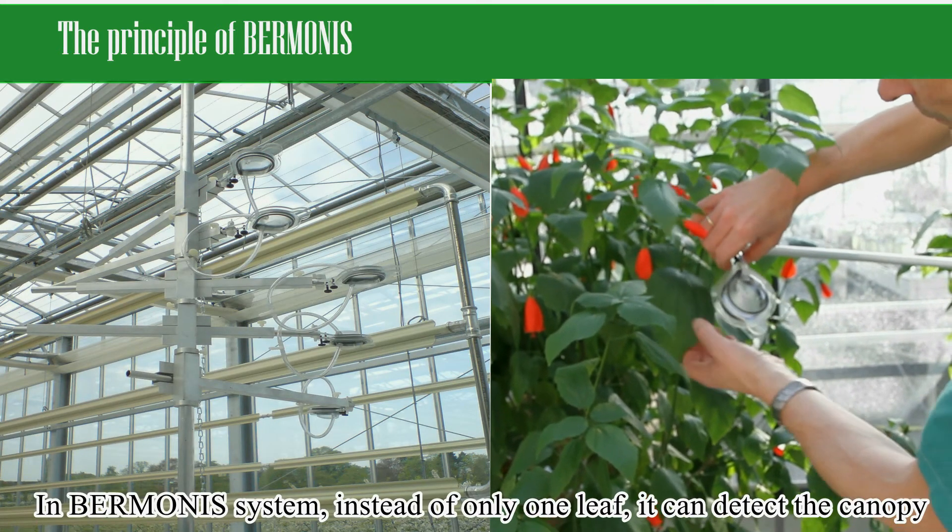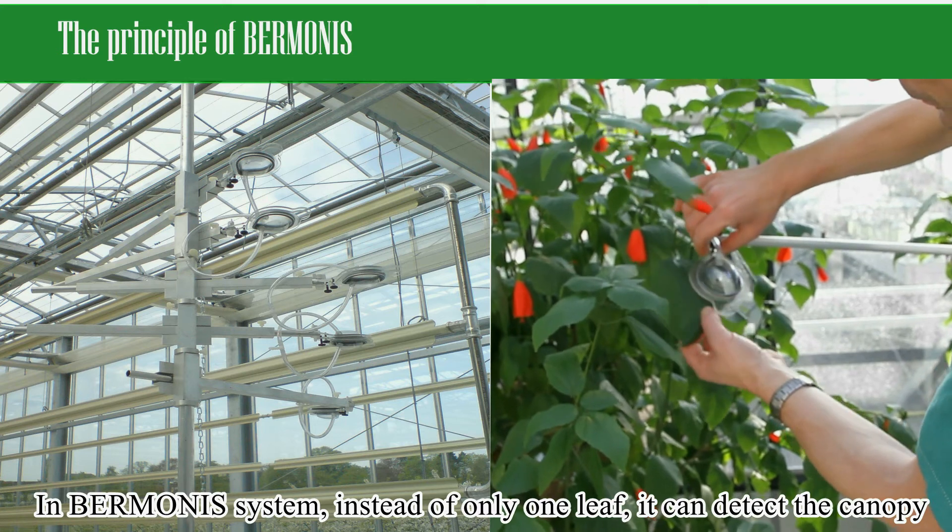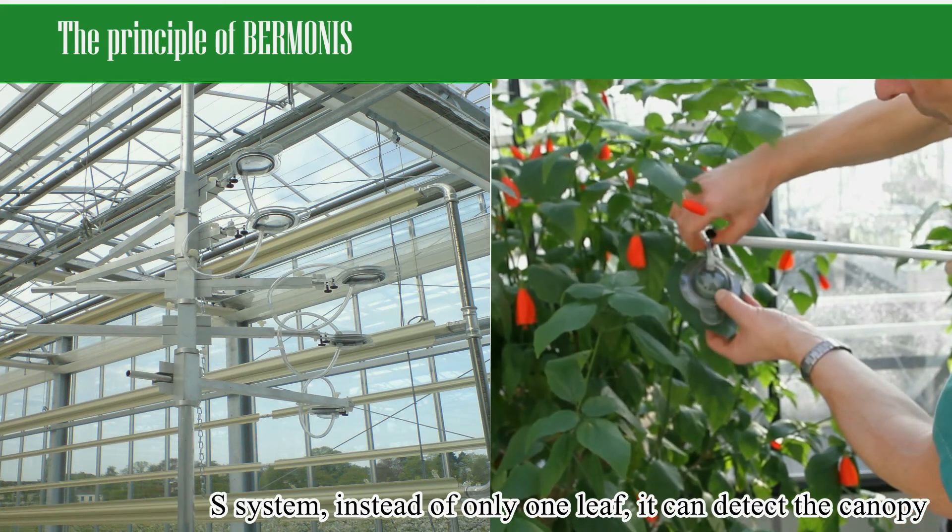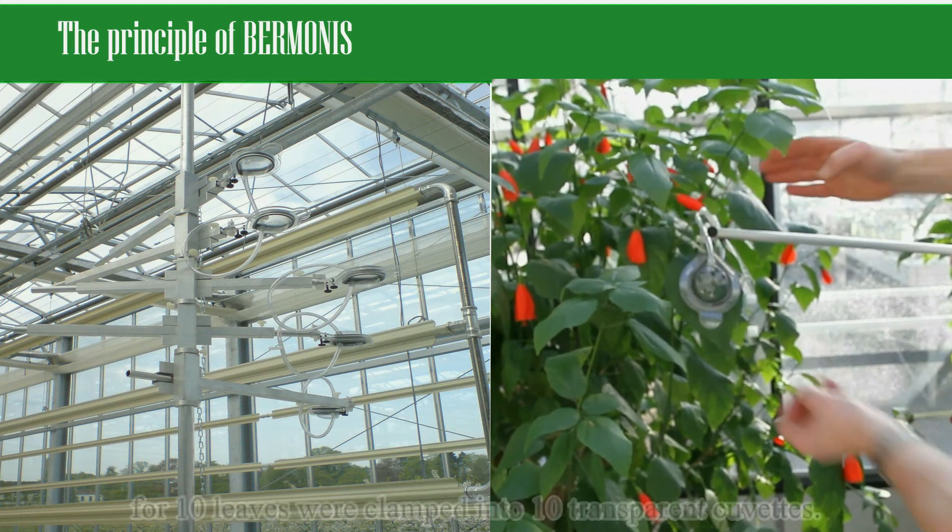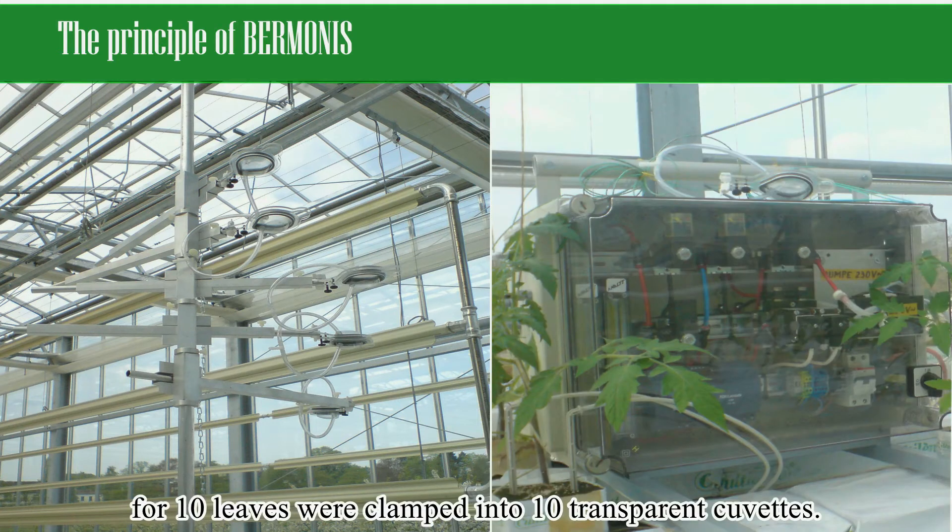In the BERMONIS system, instead of only one leaf, it can detect the canopy photosynthetic performance at the same time, for ten leaves were clamped into ten transparent cuvettes.